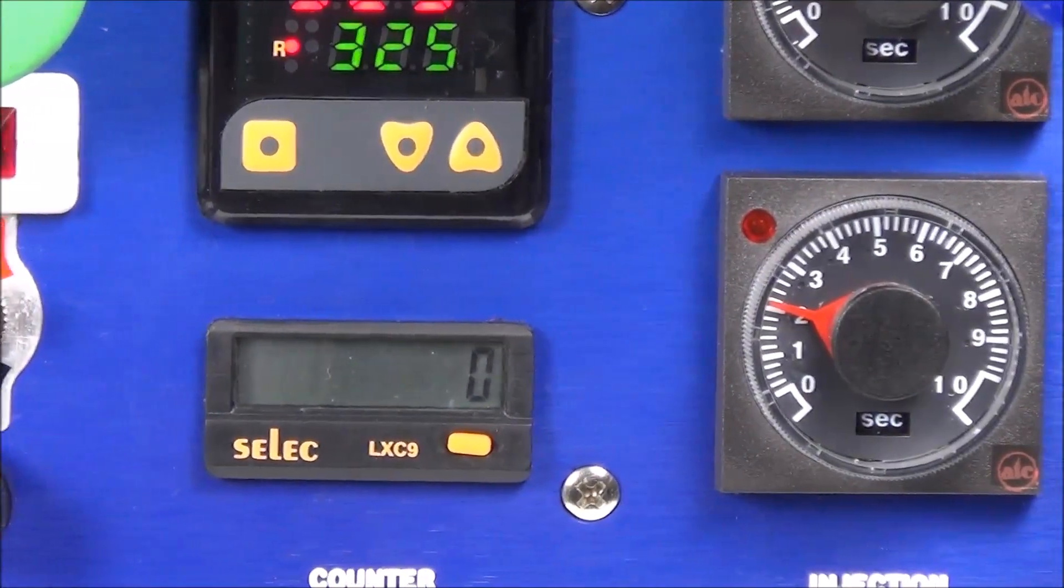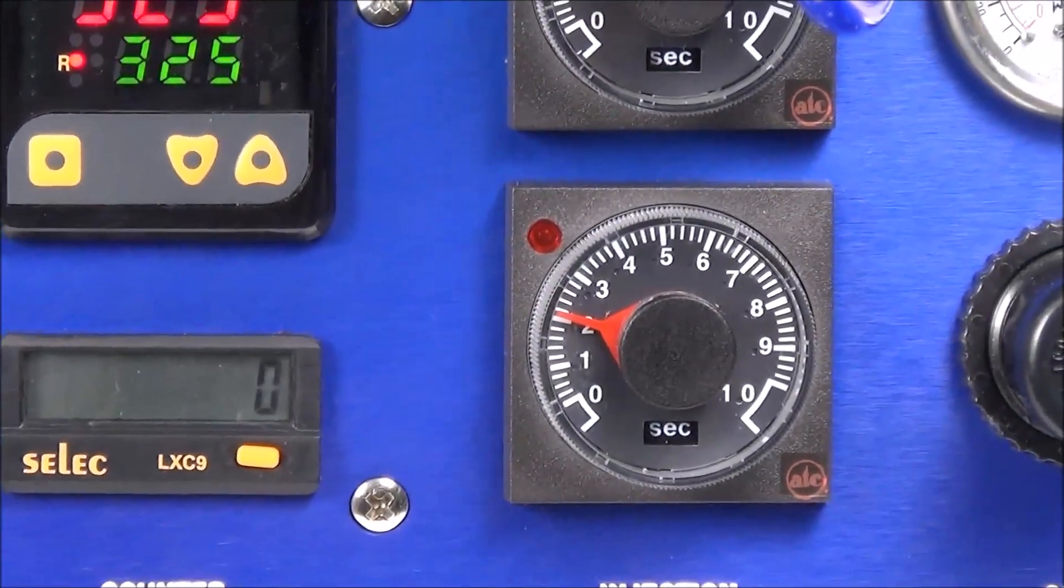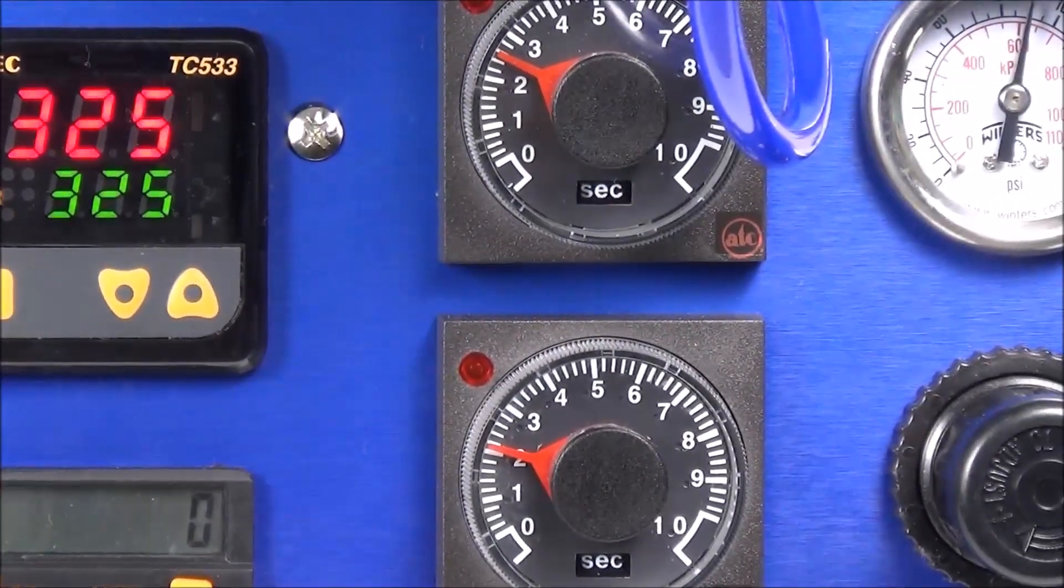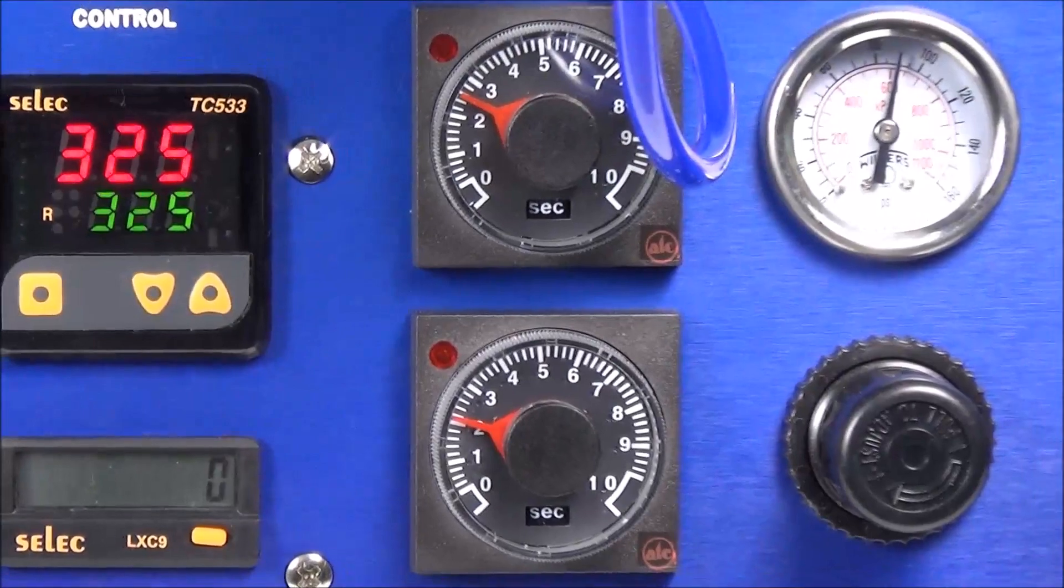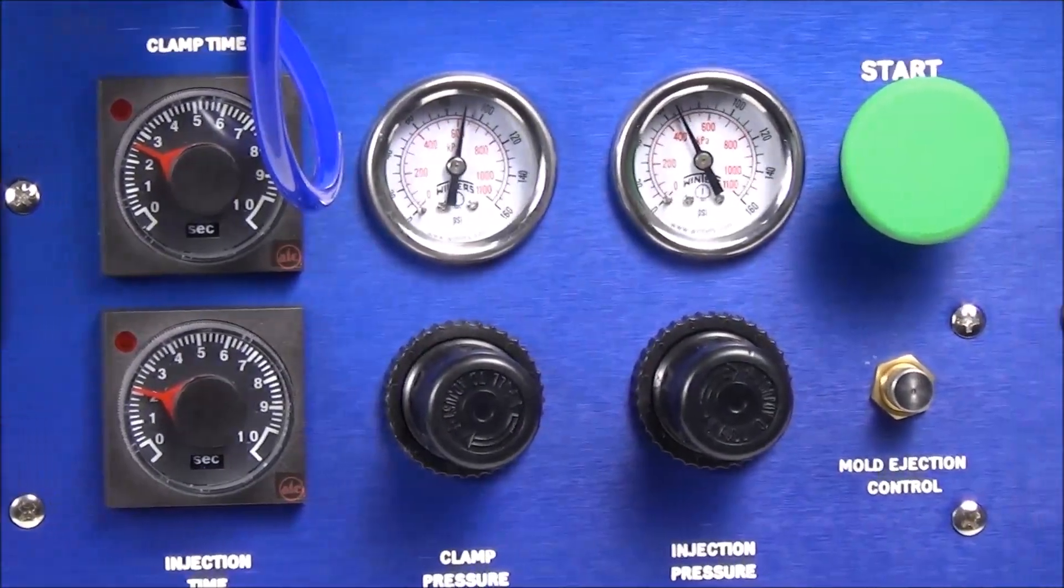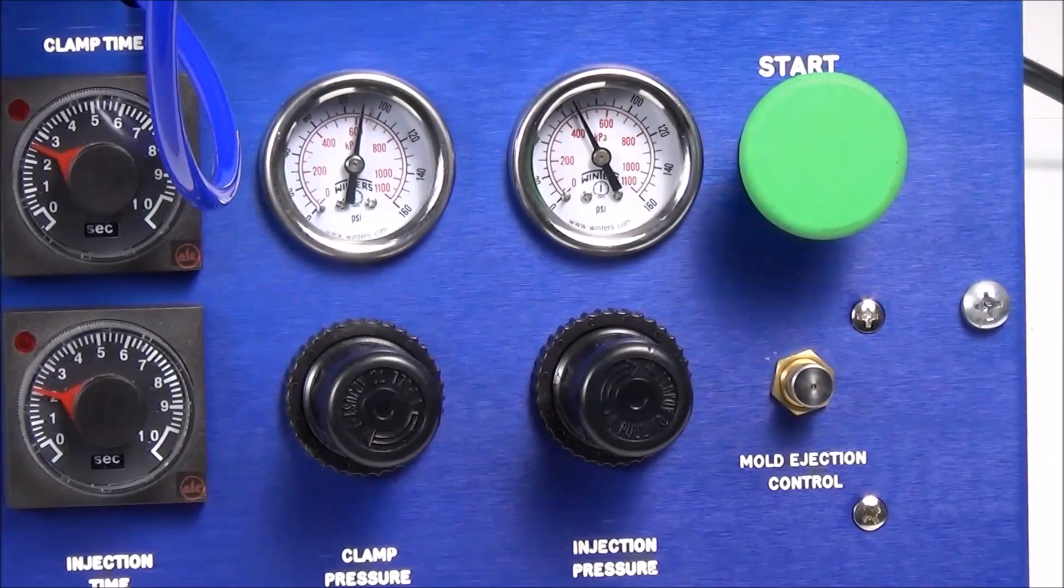The injection time and clamp time controllers are located towards the left side of the control panel and the injection pressure and clamp pressure controls are located towards the right side of the control panel. The smaller knob below the right activation button controls the mold ejector force.